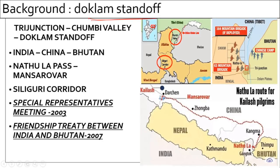Doklam is a place in Bhutan, and Chumbi Valley is a trijunction. Doklam is a Bhutan region — the Bhutan government claims it, and India supports that claim — while China claims it has historical background and that this is ancient frontier territory, so Doklam belongs to China. One more important point you need to know is Nathula Pass.